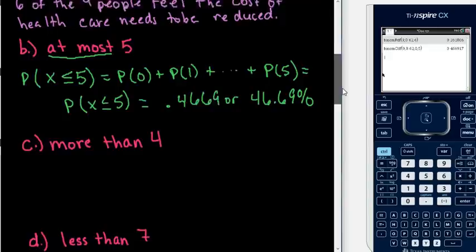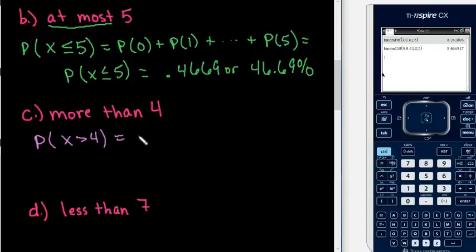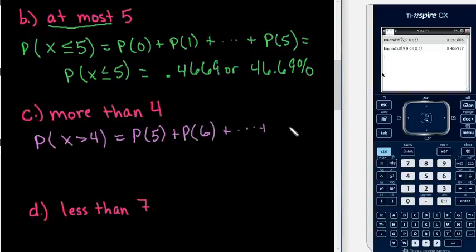For the next one, I'm going through all the scenarios that normally appear in these questions. For this one we're looking for the probability that more than 4 — all values greater than 4, so 4 is not included. Our lower limit would start at 5, because 5 is the first number greater than 4, and we continue up to the probability of 9. You can do this individually or use the calculator shortcut.